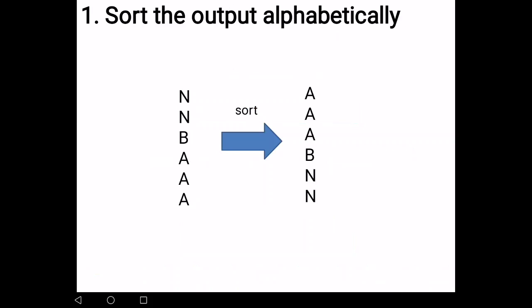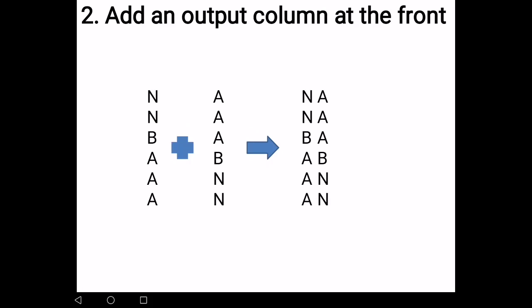Five steps. First is that you sort the output. This is the output of BWT. You sort them to become A, A, A, B, N, N. And then the second step is to add an output column at the front. N, N, B, A, A, A is the output of BWT. You add this to the sorted column that I showed you in step one. There you have two columns.